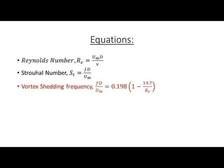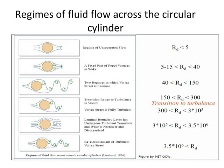The important non-dimensional parameters in this problem are Reynolds number and Strouhal number, or vortex shedding frequency. Depending on the Reynolds number range, different flow patterns could be seen.